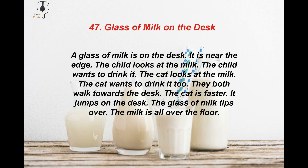A glass of milk is on the desk. It is near the edge. The child looks at the milk. The child wants to drink it. The cat looks at the milk. The cat wants to drink it too. They both walk towards the desk. The cat is faster. It jumps on the desk. The glass of milk tips over. The milk is all over the floor.